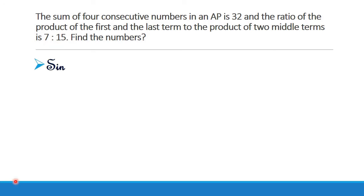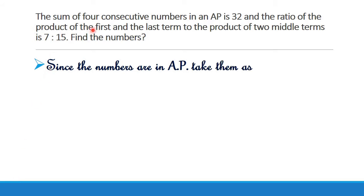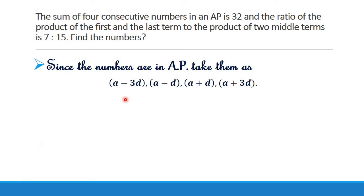Since the numbers are in AP, consider that the numbers are four consecutive numbers in AP and their sum is given by 32. Since the numbers are consecutive terms, we have to take them in a particular way. That is: A minus 3D, A minus D, A plus D, A plus 3D. So we are taking those four numbers in this way.